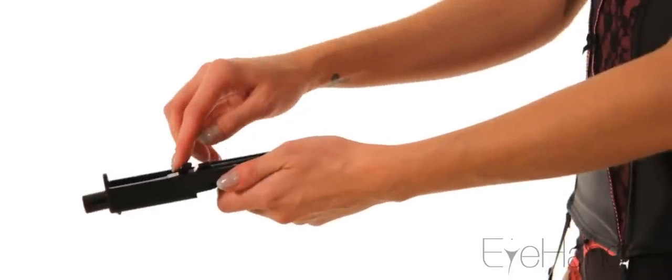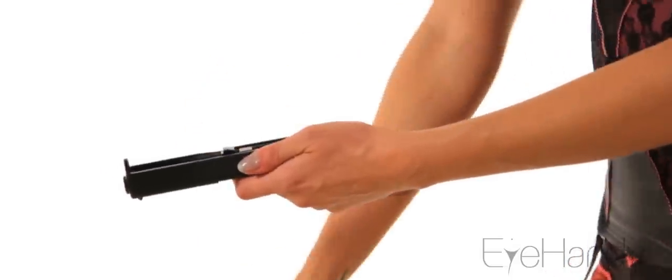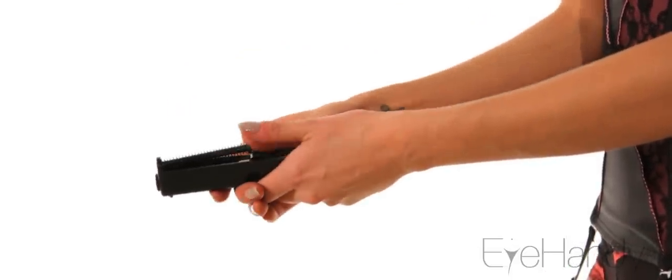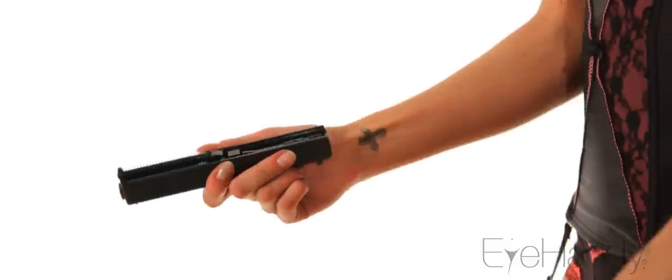Now, to piece your gun back together, turn your slide upside down and load the barrel muzzle first. Pop in the recoil spring so that the bald end is in the hole near the muzzle.